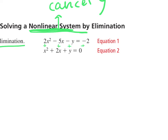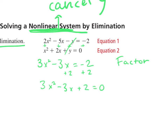We add everything in our equations together. 2x squared plus x squared gives 3x squared. Negative 5x plus 2x gives negative 3x. The y's cancel out. Negative 2 plus 0 is negative 2. So we have 3x squared minus 3x minus 2 equals 0. We move the negative 2 to the other side by adding 2 on both sides, giving us 3x squared minus 3x plus 2 equals 0. Once equal to 0, we factor.